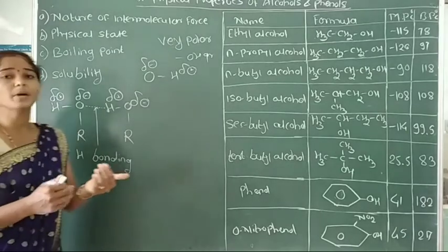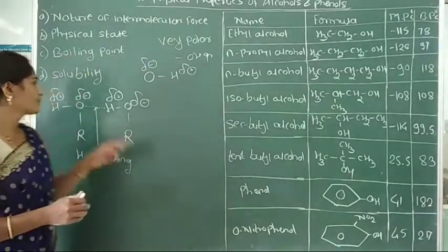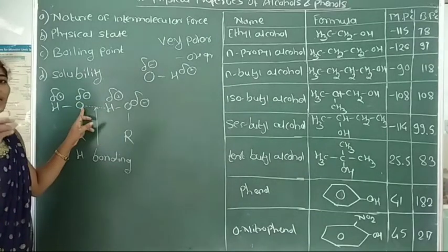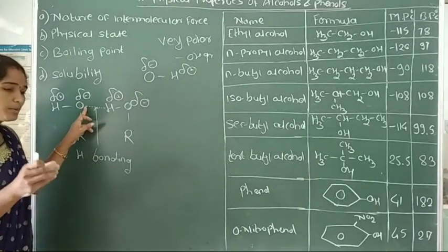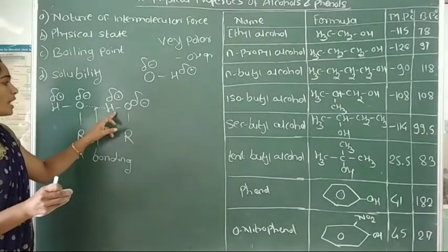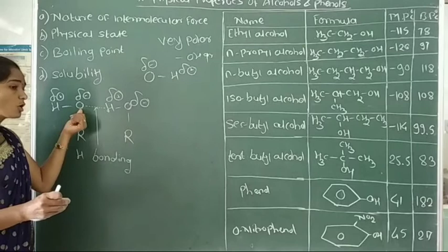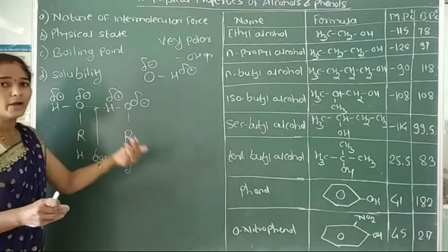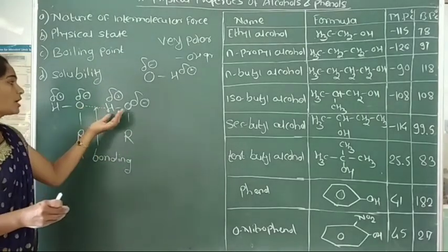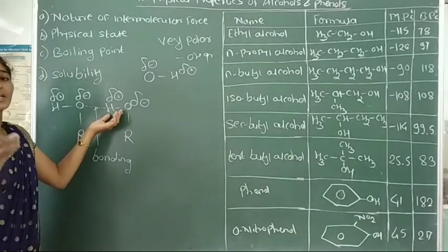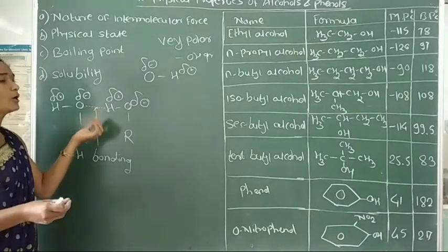What is meant by hydrogen bonding? When a strongly electronegative atom is attached to a partially positive hydrogen atom, then hydrogen bonding forms. Strongly electronegative atoms like oxygen, nitrogen, and fluorine attach to a partially positive hydrogen atom, then here form hydrogen bonding.